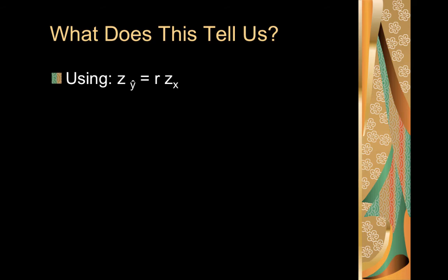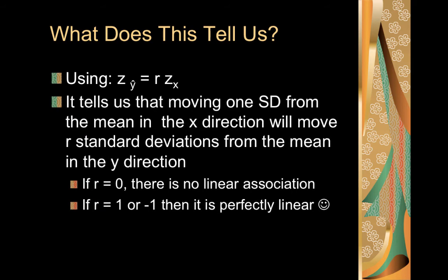Using this equation where r is our slope and also our correlation coefficient, it tells us that if we move one standard deviation from the mean in the x direction, so if this z-score is 1, we're going to multiply 1 by r and we end up with just r. That would mean that our z-score for our y direction would end up equaling our correlation coefficient, or r. It tells us that moving one standard deviation from the mean in the x direction will move r standard deviations from the mean in the y direction.